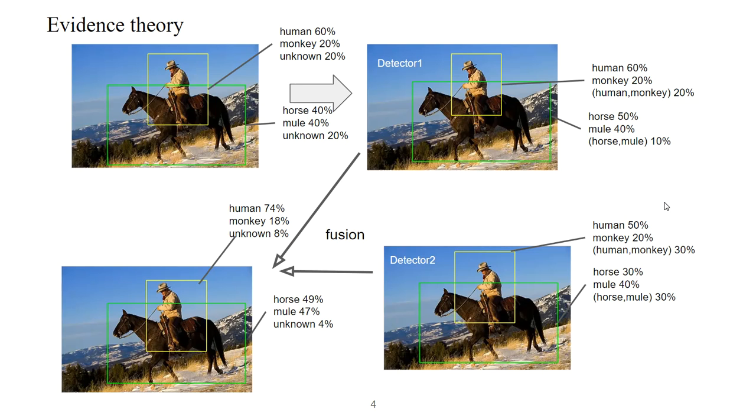Finally, we use the fusion rule in evidence theory to compromise all information sources. And then we get the final result. There is a man and horse in the photo.